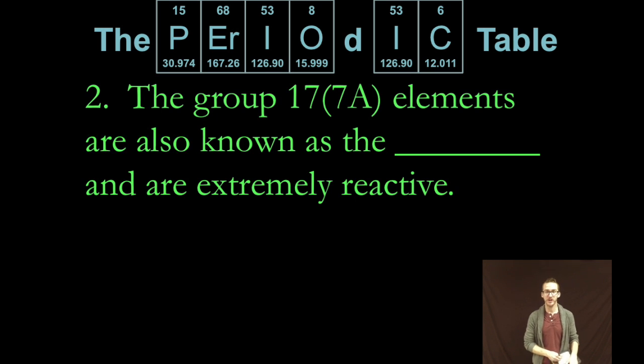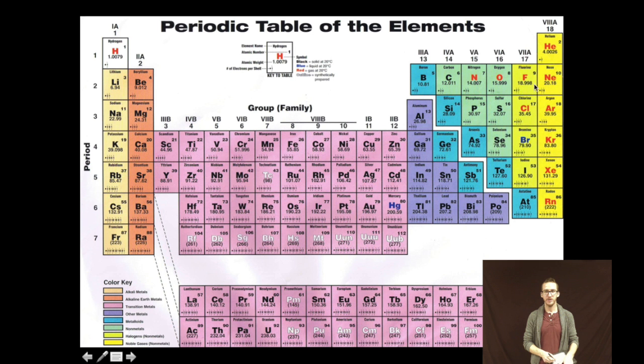Couple important subgroups of your non-metals include your halogens. It's important to know that they are extremely reactive and we'll talk about why a little bit later. But your group 7 halogens, fluorine, chlorine, bromine, iodine. Super reactive.